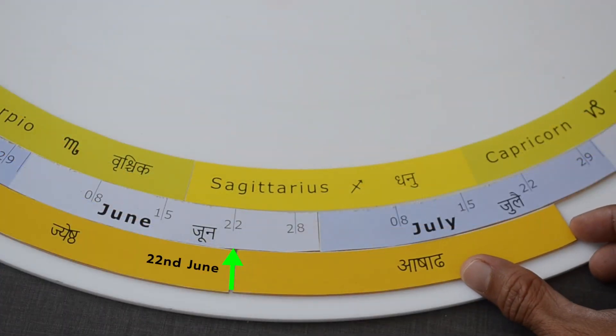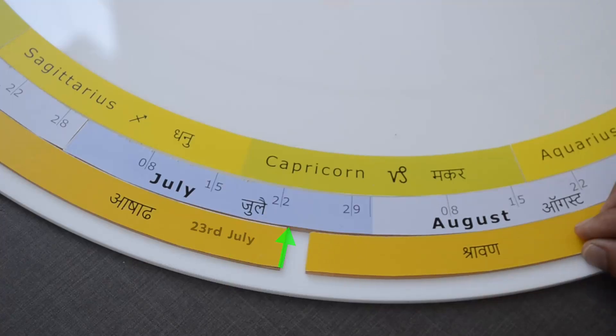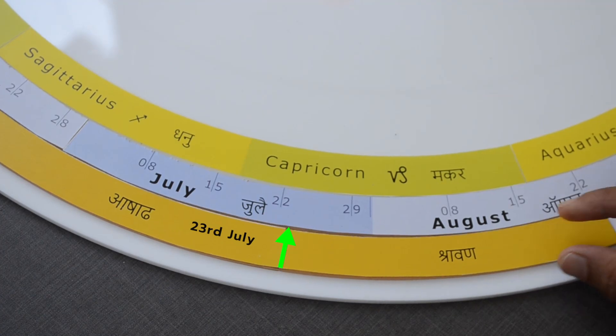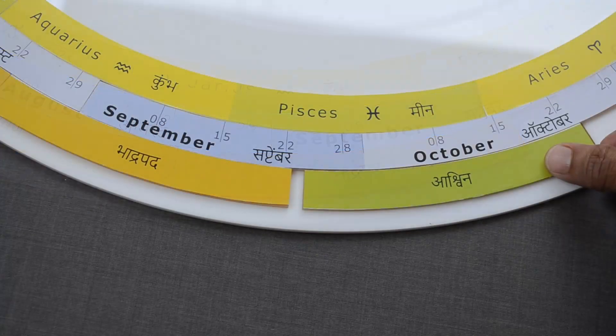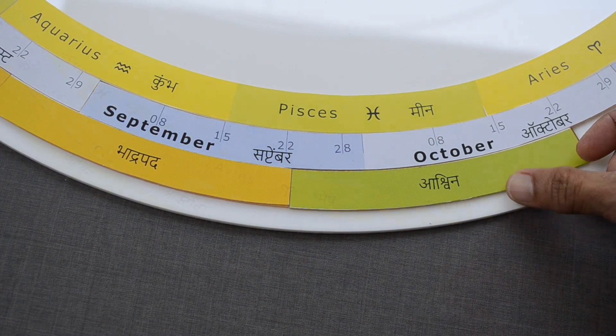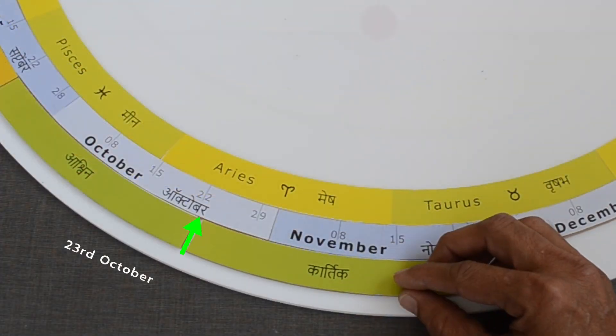Ashad, 22nd June. Shravan, 23rd July. Bhadrapad, 23rd August. Ashwin, 23rd September. Karthik, 23rd October.